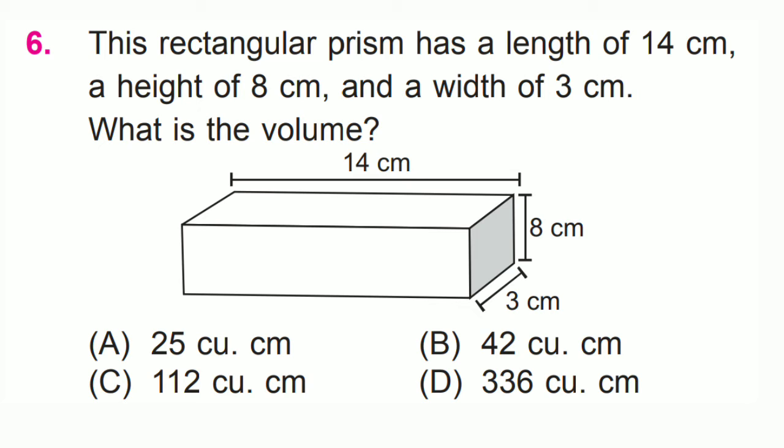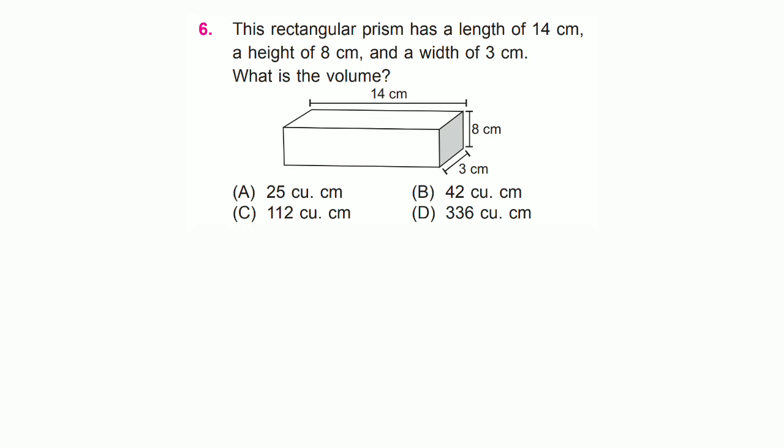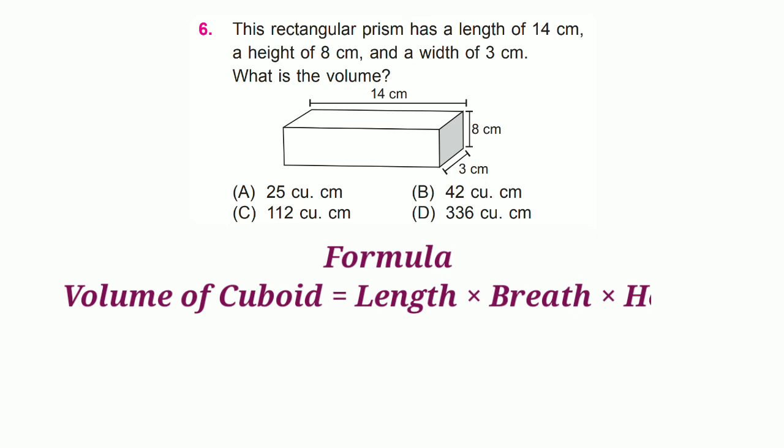This is the rectangular prism. What is the volume of rectangular prism? It is equal to volume of cuboid. Formula: length into breadth into height. So, volume of this rectangular prism equal to 14 into 8 into 3 equal to 336 cubic centimeter.